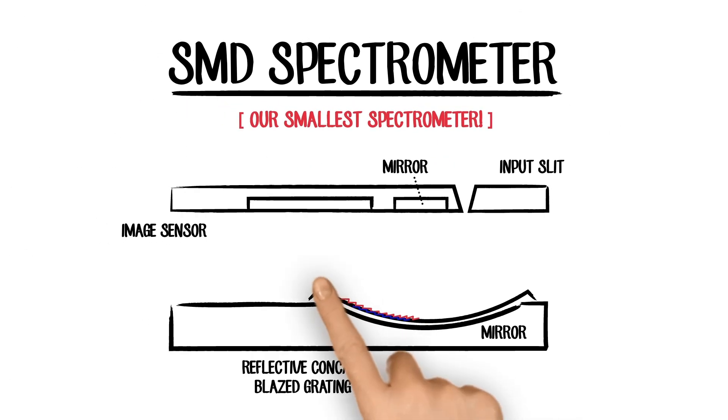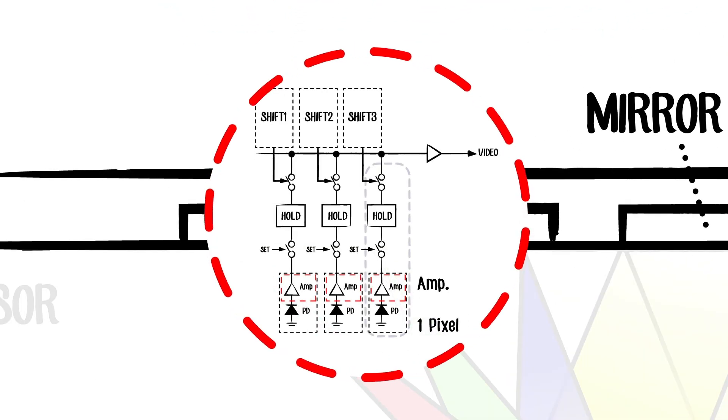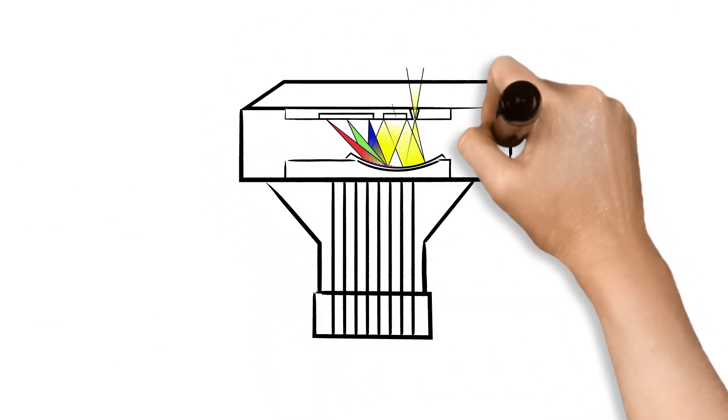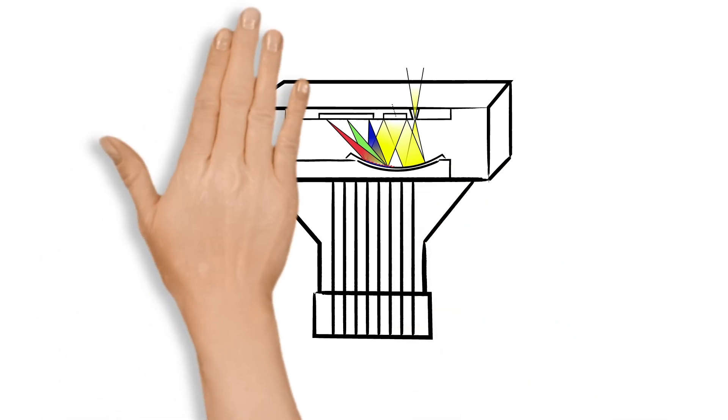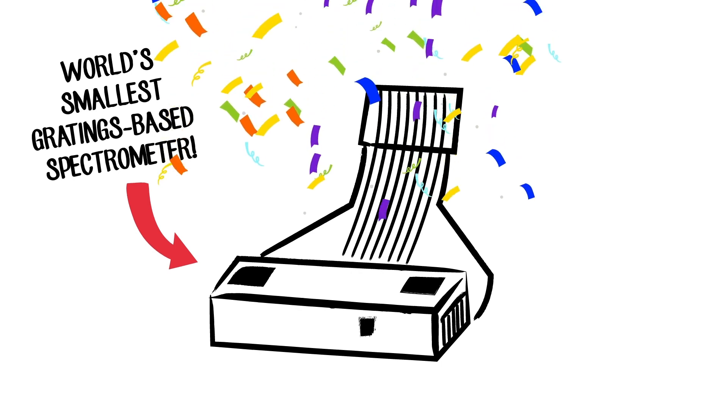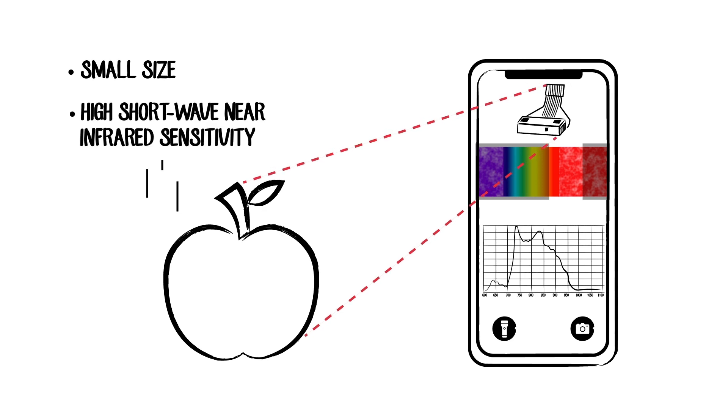The grating is formed by nano-imprinting a concave surface, and the recording device is a CMOS image sensor employing state-of-the-art active pixel technology, which makes it super sensitive. The use of a folding mirror has made this spectrometer so small that it's earned the title as the world's smallest grating-based spectrometer. Combine its small size with its high shortwave near-infrared sensitivity, and you have the ideal spectrometer for smartphone-based ripeness measurements.